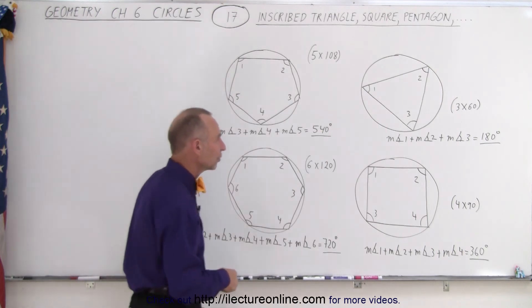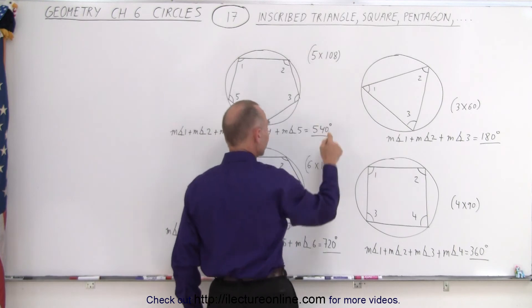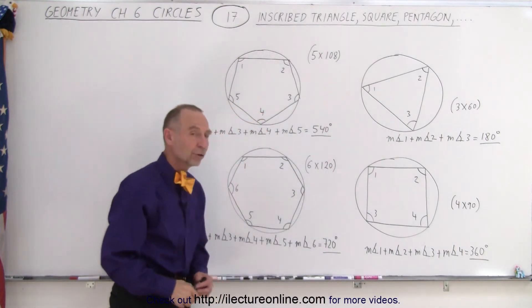Also notice that the average angle here is 60 degrees, there it's 90 degrees, for a pentagon it's 108 degrees, and for a hexagon it's 120 degrees.